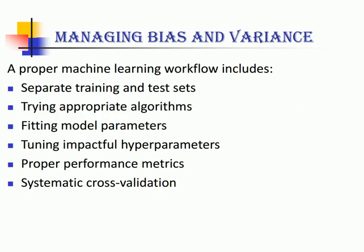How do you choose bias and variance then? A proper machine learning workflow would be: separate out training and testing sets, try appropriate algorithms, fit model parameters properly, then tune the hyperparameters judiciously. Calculate proper performance metrics — not always is accuracy the best metric, so go for F1 score or other metrics — and do systematic cross-validation.